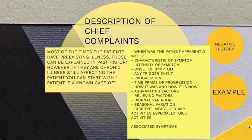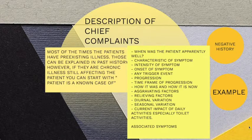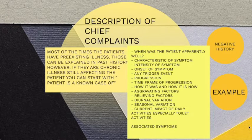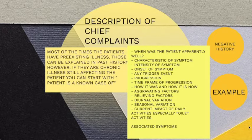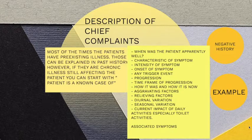Then coming to the description of chief complaints. Most of the times the patient has pre-existing illnesses, which can be explained in past history. However, if the patient's illnesses are chronic and are still affecting the patient, then you can start with 'patient is a known case of.' In the description of chief complaints, you have to tell when the patient was apparently well, and describe the characteristics of the chief complaint: intensity, onset, any triggering event, how it progressed, the time frame of progression, how it was earlier and how it is now, aggravating factors, relieving factors, diurnal variation, seasonal variation, current impact on daily activities especially toilet activities, and associated symptoms.